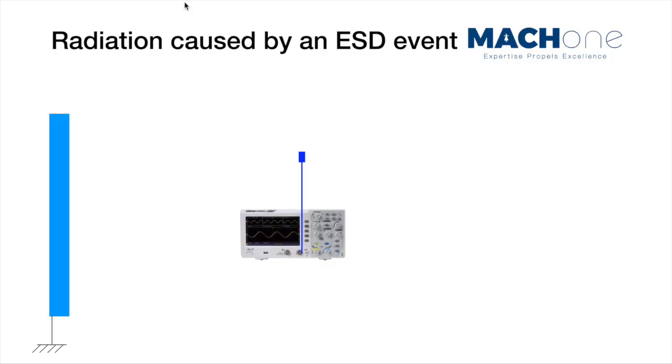What you have just observed is an ESD event and that ESD event caused radiated emission. The radiated emission is picked up by a small antenna which is connected to an oscilloscope.